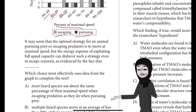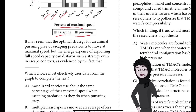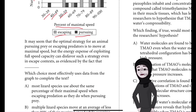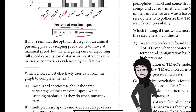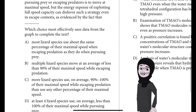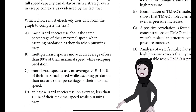The question states: it may seem that the optimal strategy for an animal pursuing prey or escaping predators is to move at maximal speed, but the energy expense of exploiting full speed capacity can disfavor such a strategy even in escape contexts, as evidenced by the fact that blank. Which choice most effectively uses data from the graph to complete the text?